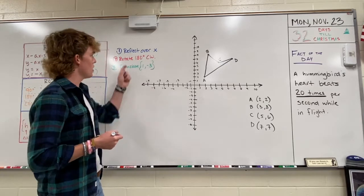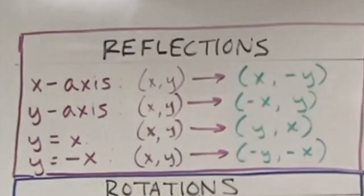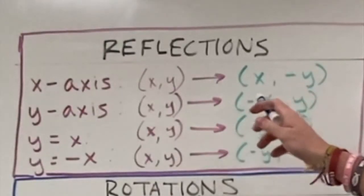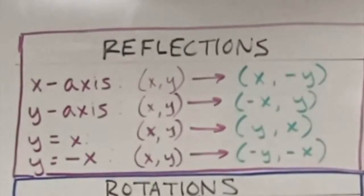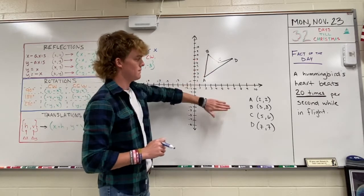So first of all we'll reflect over the x-axis. And looking at our pattern here on the right, when we reflect over the x-axis all we do is change the sign of our y. So we don't have to switch the x and the y around or anything, it's really simple. And that operation will flip this image over the x-axis.